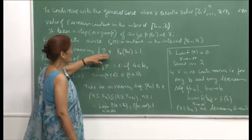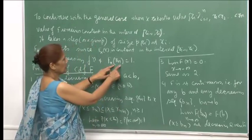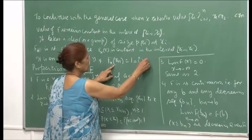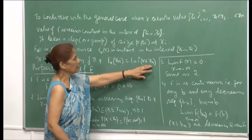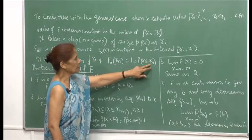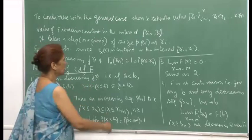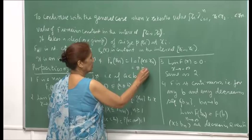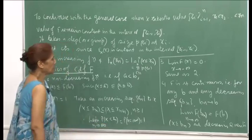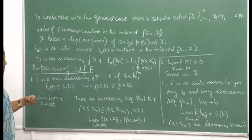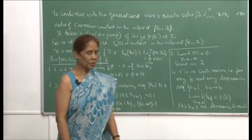The CDF is also an increasing function. For x less than or equal to x_n (the largest value), since all probabilities have been added up, this equals the summation of all P(x_i) for i from 1 to n, which must equal 1. Let me now formalize the properties of the cumulative distribution function.